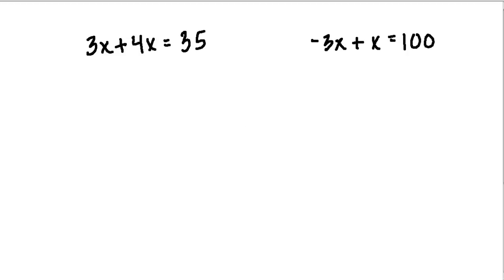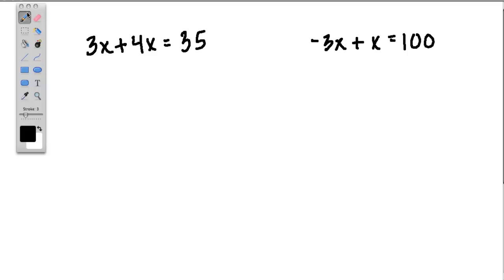When you solve for an equation — and we have equations here, not just expressions, but equations because we have equal signs — what you're trying to do is figure out what number you can put in for x so that this side of the equation is the same as this side. In other words, what value can I plug in for x so that I actually get 35?